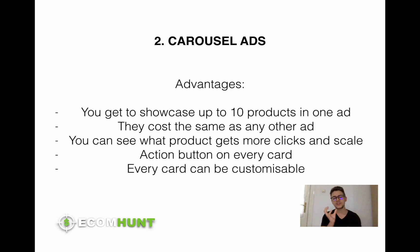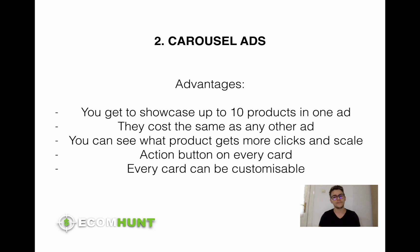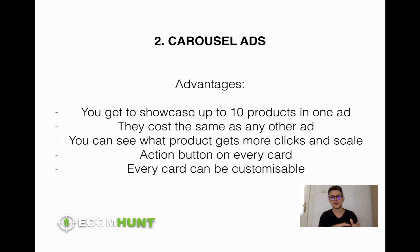You can see which product and which card gets more likes and scale from that. If you see that among 10 products only product number seven got the most likes, you know people are attracted to that product more — so you take product number seven and make a separate ad for it, or put it first so people see it first. Another advantage is that you will have an action button on every card when you scroll, so the 'Shop Now' or 'Buy Now' button will be more visible than in the single image ad.